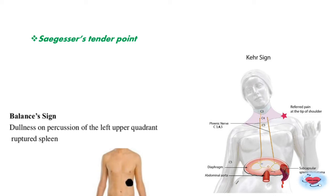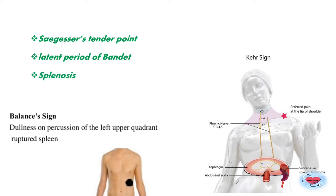Latent period of Bandit refers to the period in subcapsular hematoma where a blood clot temporarily seals the bleeding, but the clot later dislodges causing severe hemorrhage. Splenosis refers to fragments of splenic tissue scattered over the peritoneal cavity following splenic rupture. Thus Kehr's sign, Balance's sign, Saegesser's sign, Latent period of Bandit, and splenosis are all important signs of splenic rupture.